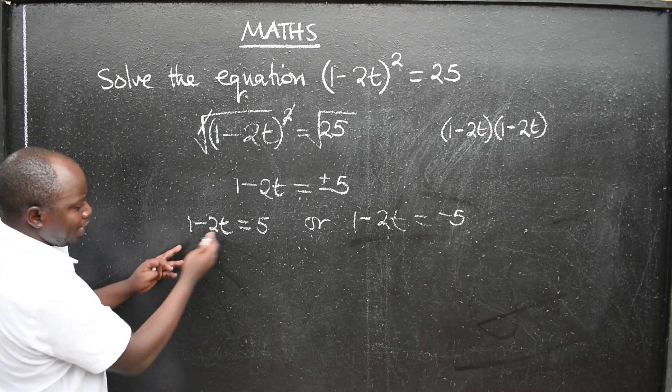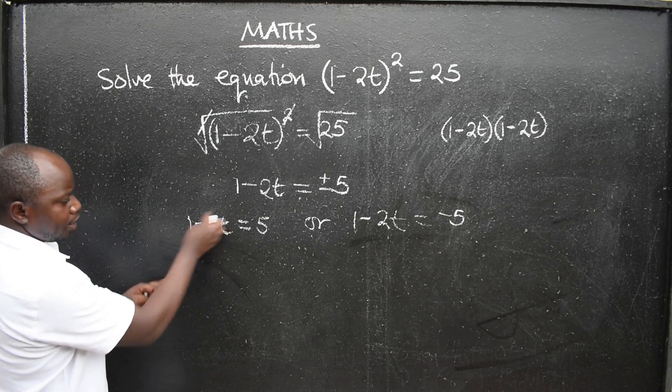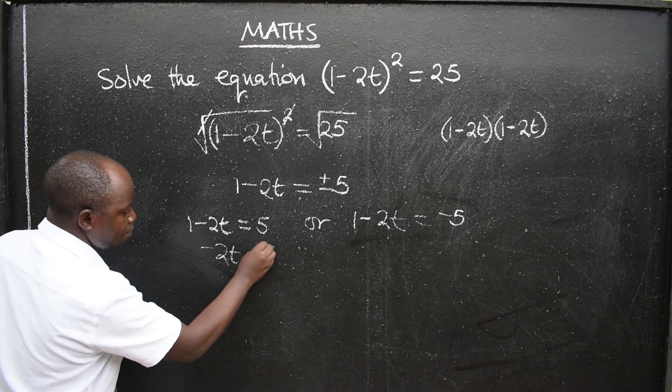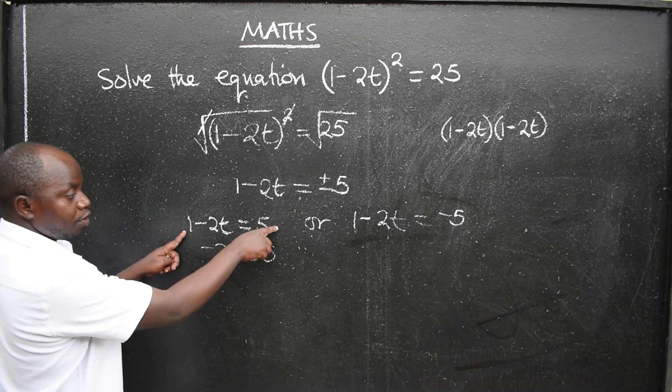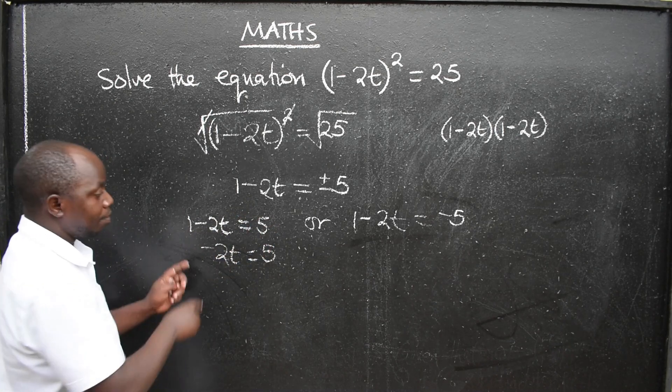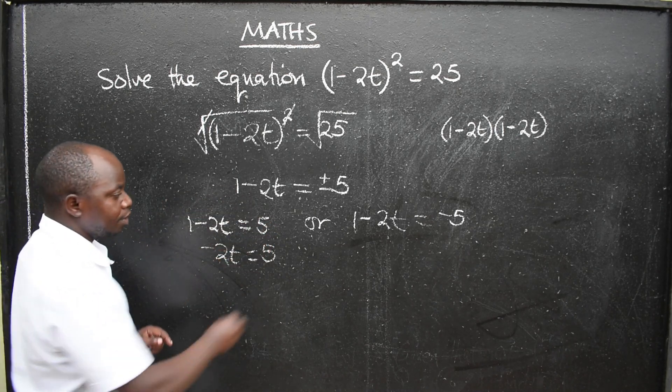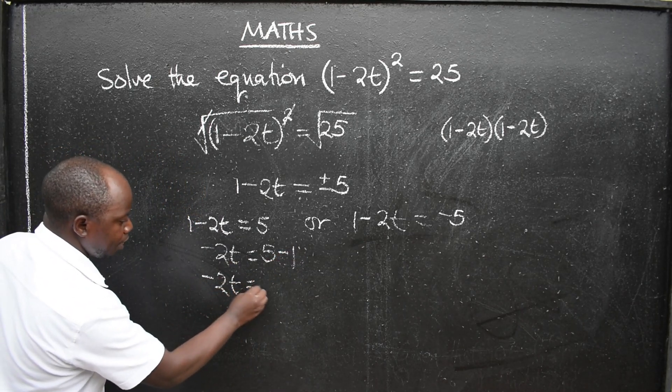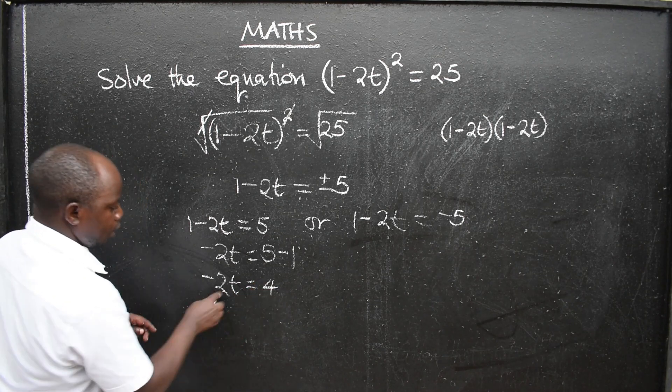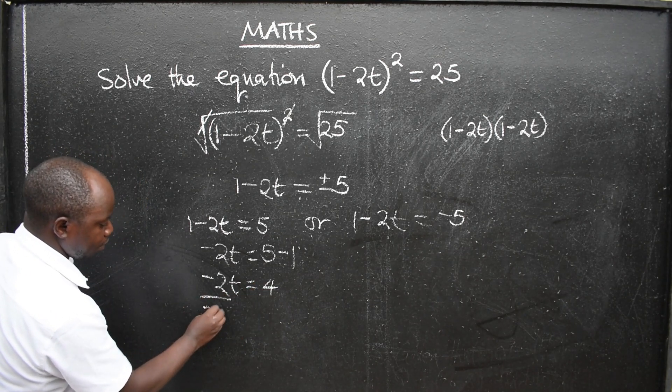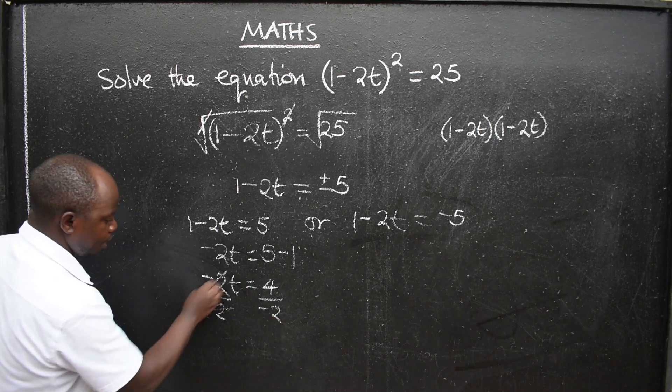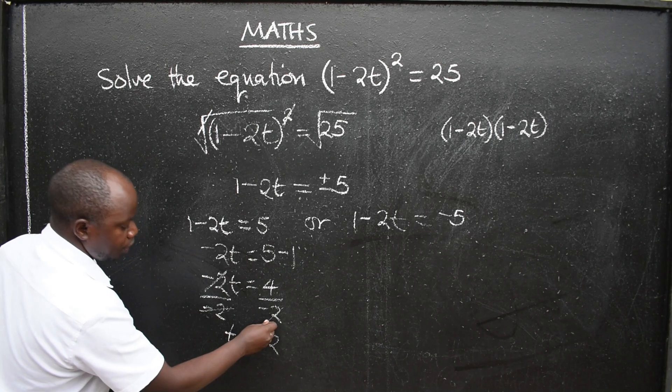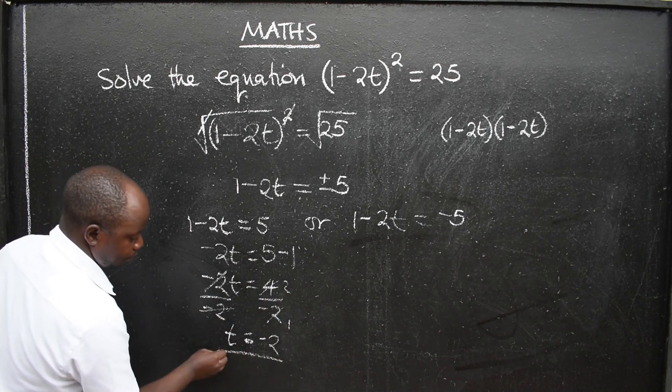This one, to remain with t, we are going to get this term. Solve them together with the negative, -2t is equal to 5. This one is positive when it crosses the equal sign. Or the additive inverse of 1 will be minus 1. How do you see that? So this will be -2t will be equal to 4. To remain with t, divide both sides by -2, even here -2. Cancel them. What would be t? t will be equal to -2. Are you getting that?